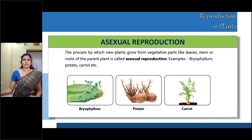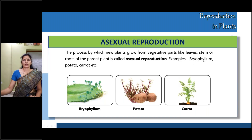Asexual reproduction is also called vegetative propagation. The process by which new plants grow from vegetative parts like leaves, stem, or roots of the parent plant is called asexual reproduction. Examples include bryophyllum — this is a leaf called bryophyllum — potato, and carrot. Let us learn about these parts individually in the next slide.